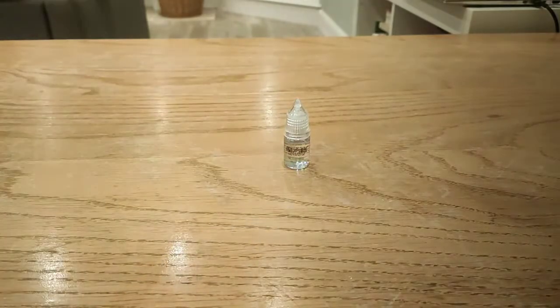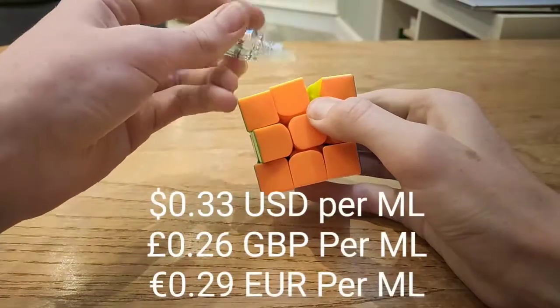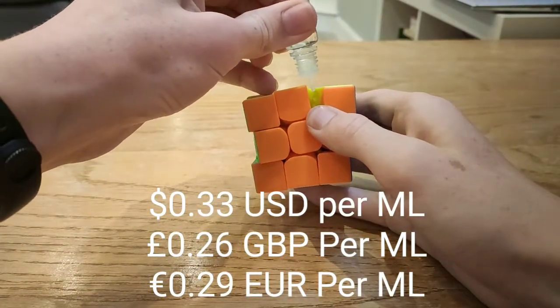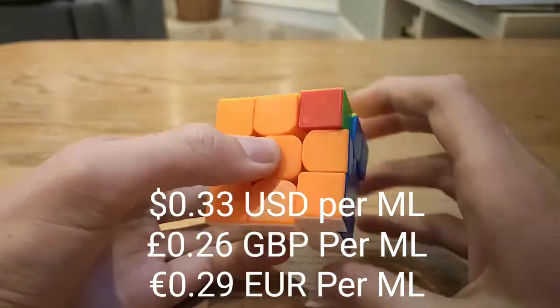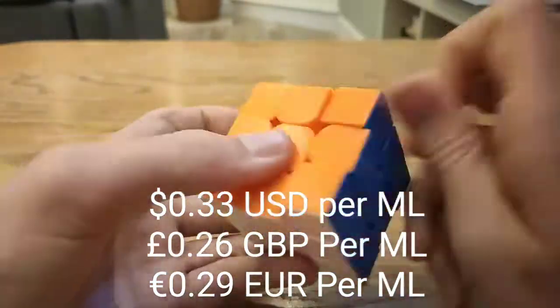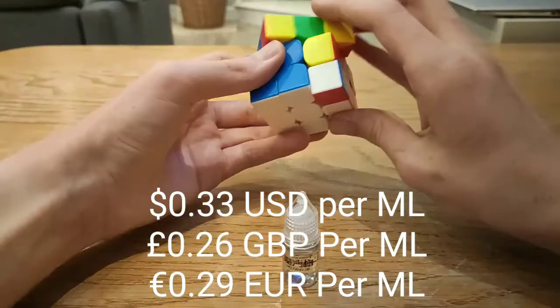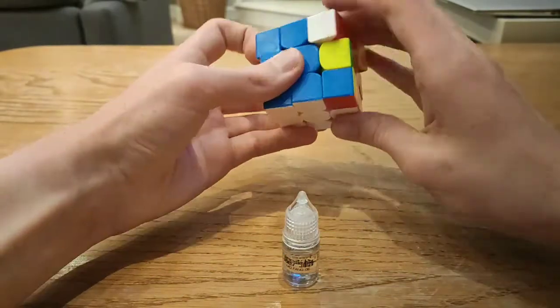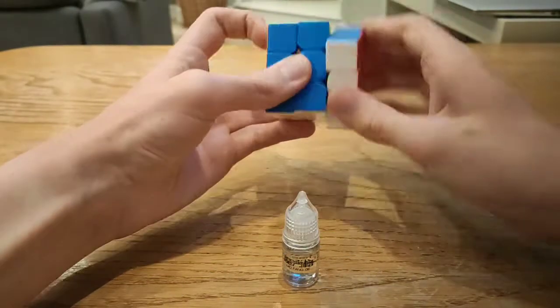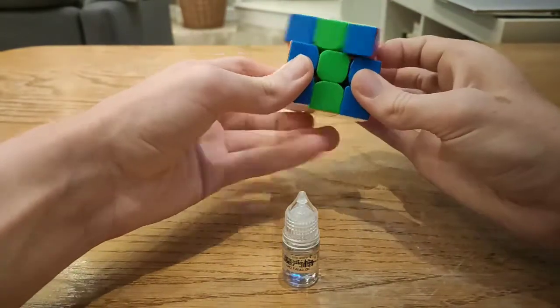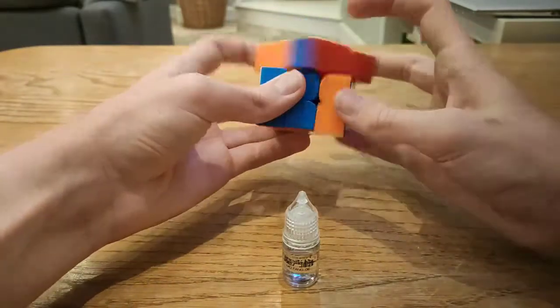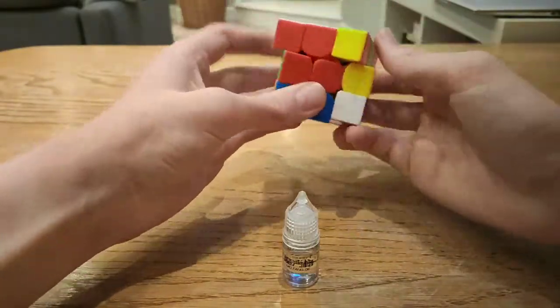First we'll be doing chi lube. Chi lube does not really do much unless you add about six or seven drops. Once you've done that, the cube is a bit quieter and a bit smoother. There is no major change to performance, it just feels a lot nicer to turn.